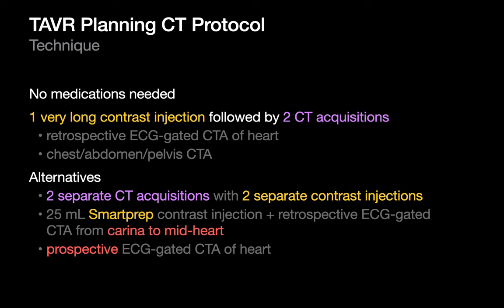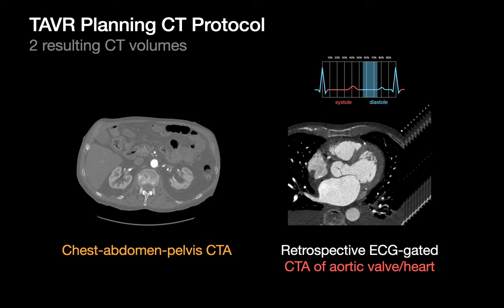Prospective ECG-gated CTA of the heart can reduce radiation dose, but around 10% of acquisitions on average could end up being non-diagnostic and need to be repeated. However you do it, you'll hopefully end up with a nice CTA volume of the entire chest, abdomen, and pelvis, and a retrospective ECG-gated 4D CTA of the aortic valve and heart, usually presented as a set of CT volumes at 10% intervals through the cardiac cycle.